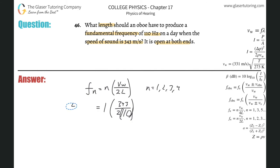And voila, that's it. Let's just calculate: this is 343 divided by parenthesis two times 110, and that's 1.56. So the length of the tube is going to be equal to 1.56.